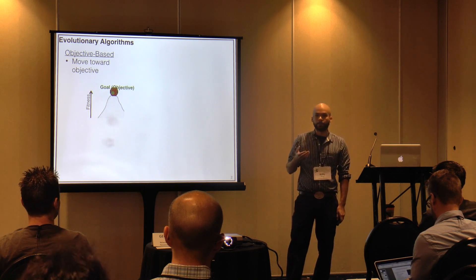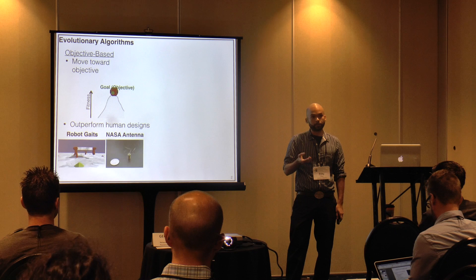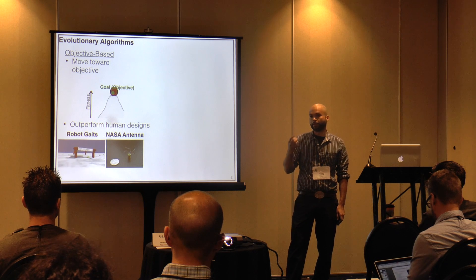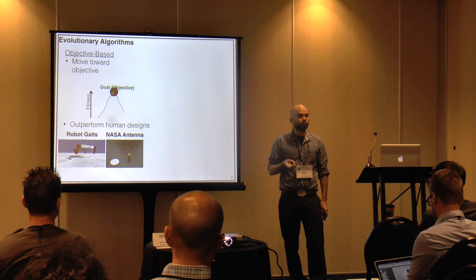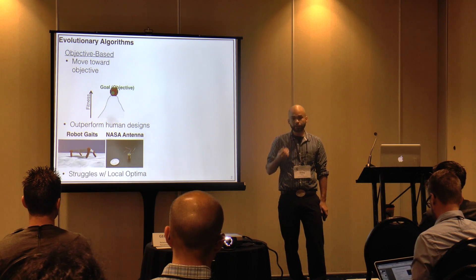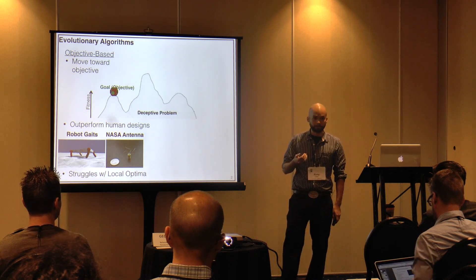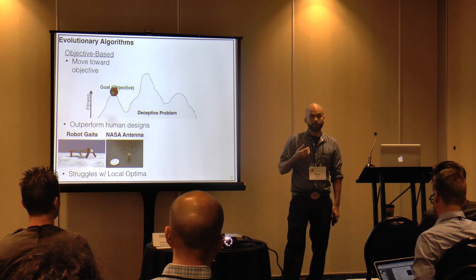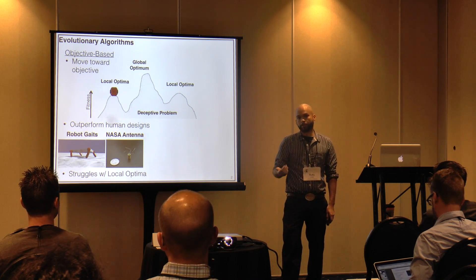EAs can be very powerful. We can use them to do things like evolve gaits for quadrupeds, or even design antennas for NASA spacecrafts. But even though they're powerful, they do have shortcomings. Mainly, they struggle with finding the global optimum. This is even more present when we have what's called a deceptive problem, where we have many local optima and one global optimum that we're looking for.